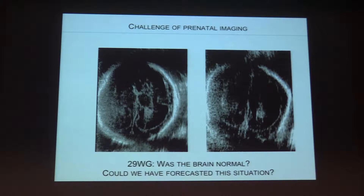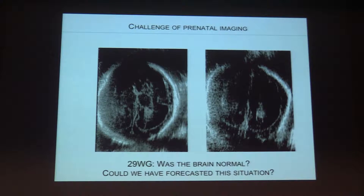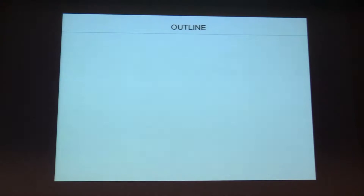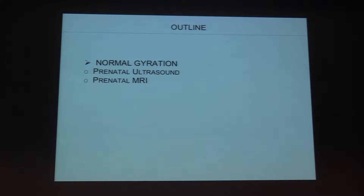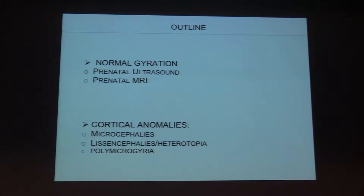Regarding the prenatal imaging of this little girl, could we have forecasted this situation? Could we consider that this aspect on prenatal ultrasound was normal? We are going to try to recognize what is the normal pattern and the abnormal pattern of the cortical aspect in the fetal brain. To recognize the abnormal, we first have to know the normal.